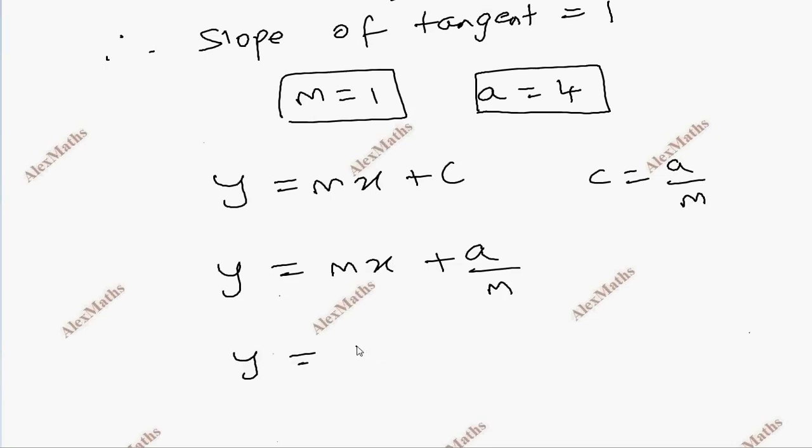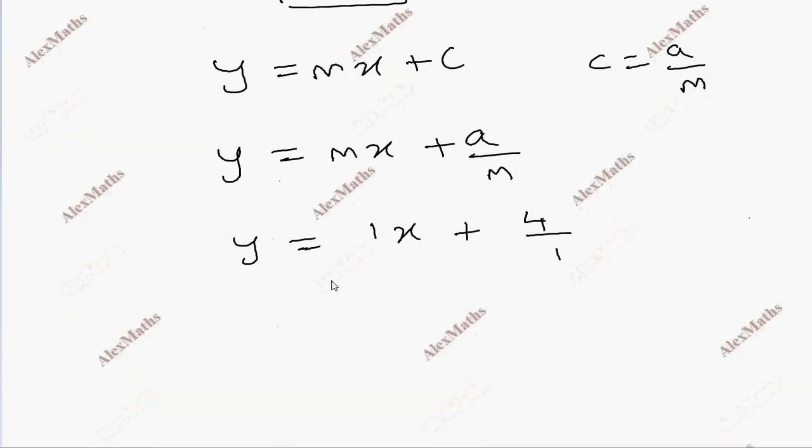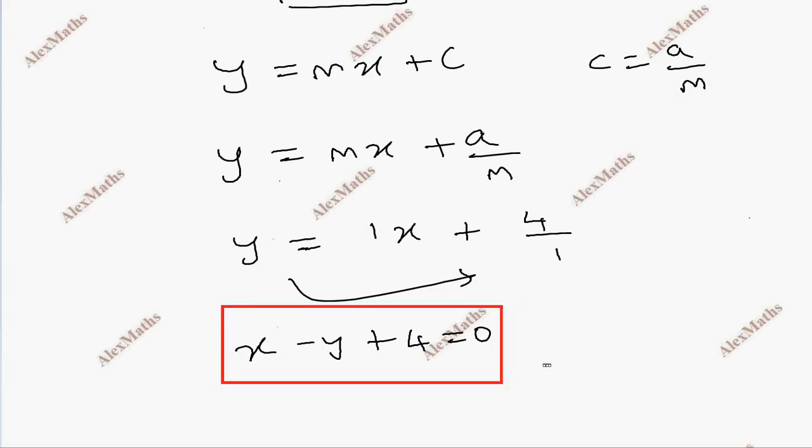Substitute the a value: 1x plus 4 by 1. So x minus y plus 4 equal to 0. This is the tangent equation.